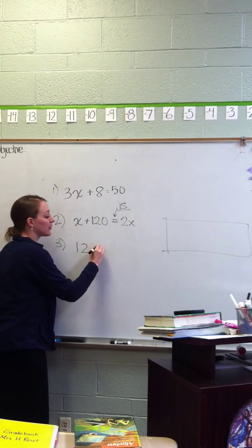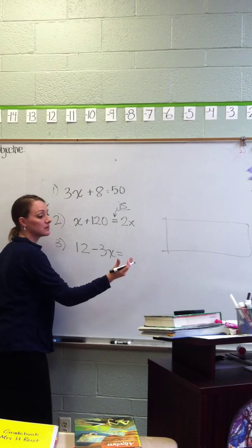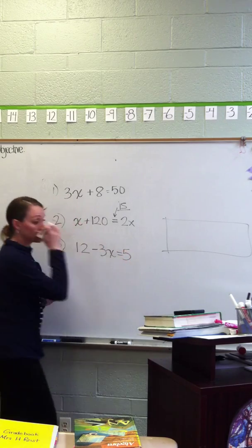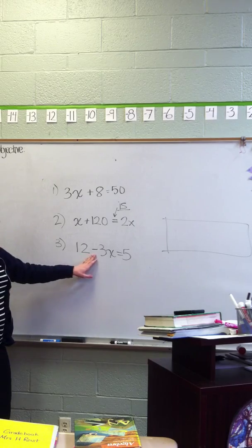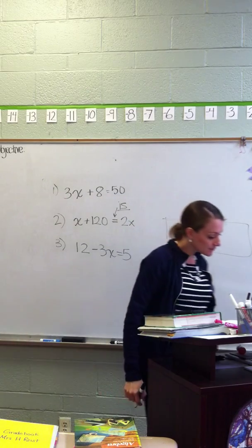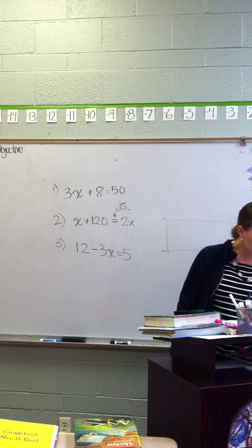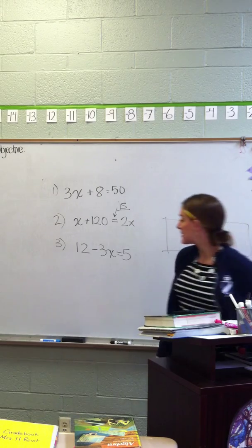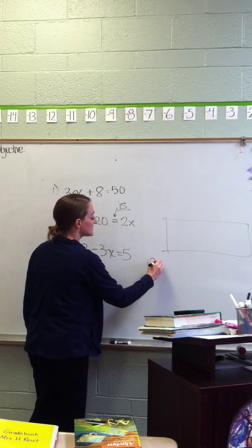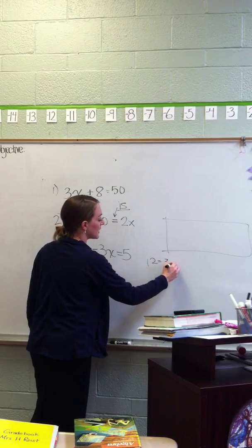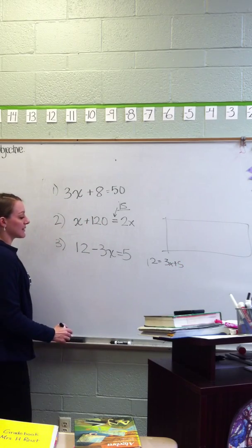If you've ever been to Joanne's with your mom, and they hold the ream of fabric, and they go really quick, and then they zoom the scissor up, those two yardsticks that they go from between is the length of that yard. Just FYI. So, 12 minus 3X equals 5. Can it be 12 equals 3X plus 5? Yes. Yeah, I think we'll get the same answer.